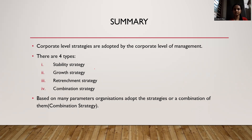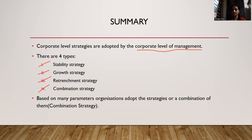Here we come to the end of this topic. To quickly summarize: corporate level strategies are adopted by the corporate level of management — the top level. There are basically four types of corporate strategy: stability strategy; growth strategy with many different sub-types; retrenchment strategy with three types; and finally, the combination strategy, which is a mixture of all the above. Based on many parameters, the organization adopts the strategy or a combination of them.